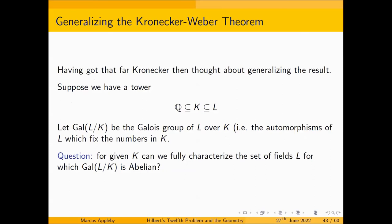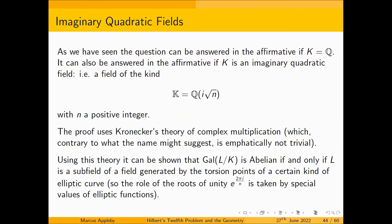Having thought about that, Kronecker then thought about generalizing the result. Suppose we have a tower of this form with the Galois group of L over K. The question then is: for which given K can we fully characterize the set of fields for which that's abelian? Kronecker made a start on this by making initial moves in what eventually led to the theorem characterizing abelian extensions of imaginary quadratic fields — fields generated by i times the square root of a positive integer.